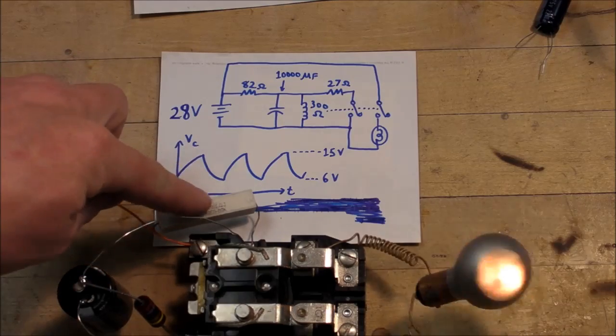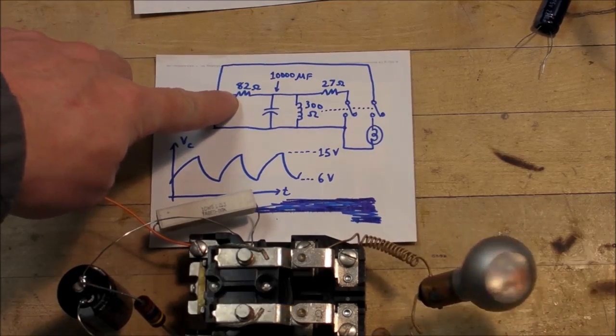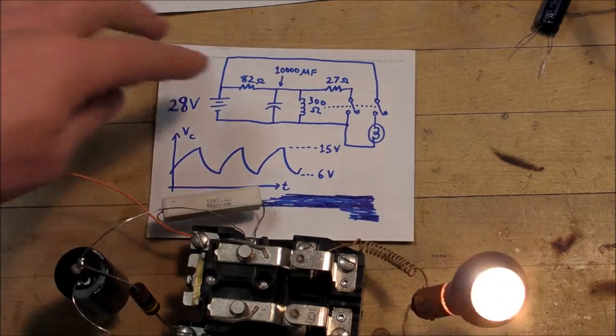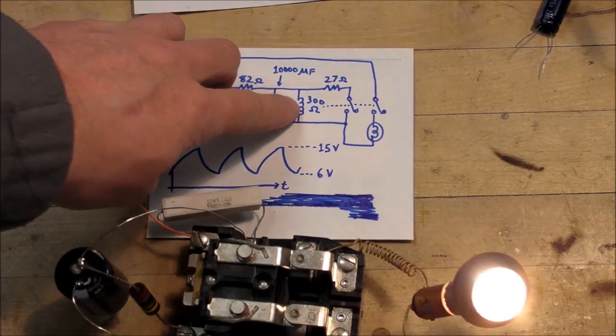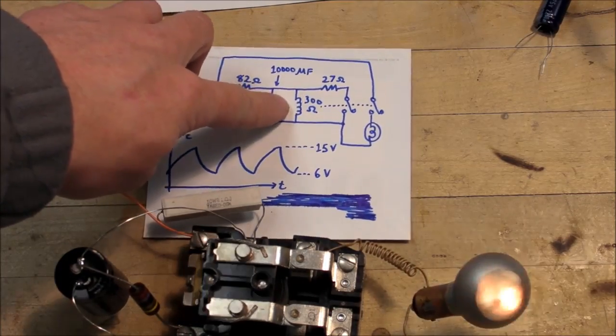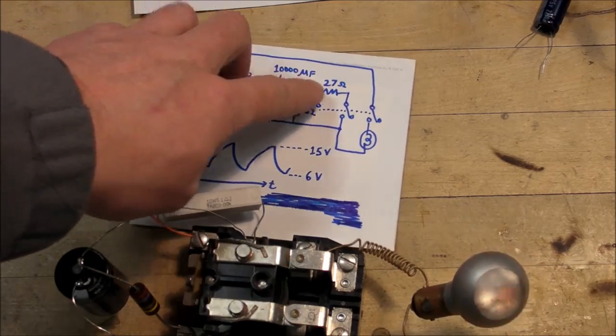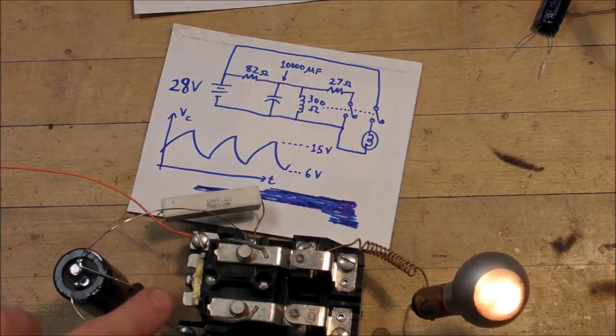This is the 82 ohm resistor right here. Here's the 10,000 microfarad cap. The coil has about 300 ohm DC resistance and 27 ohm right here.